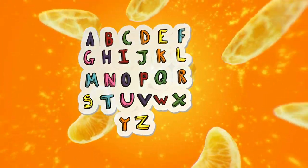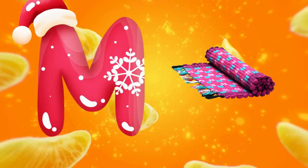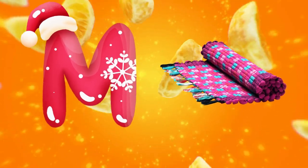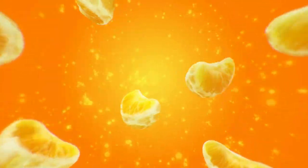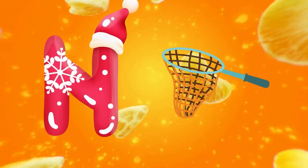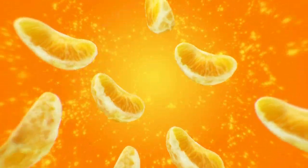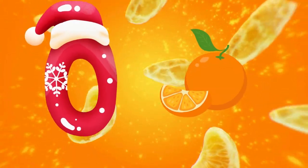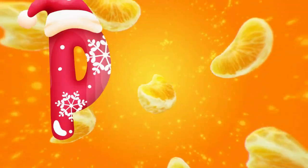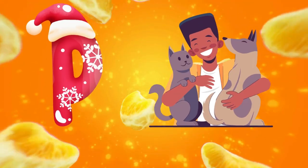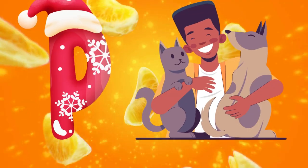M is for mat, m-m-mat. N is for net, n-n-net. O is for orange, o-o-orange. P is for pet, p-p-pet.